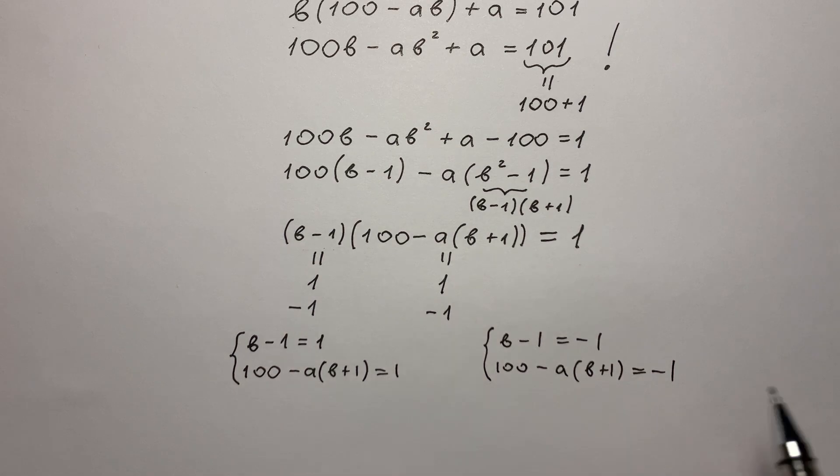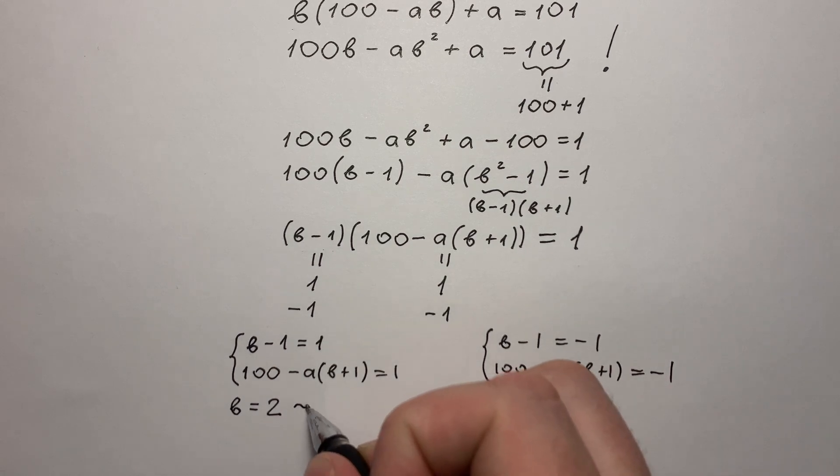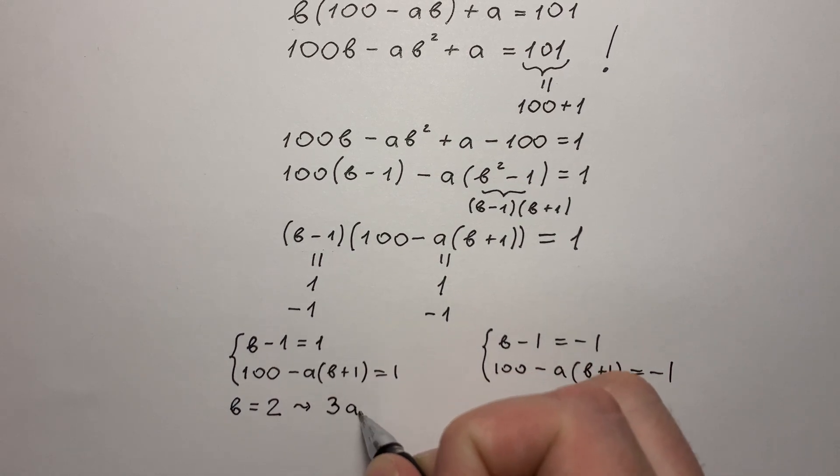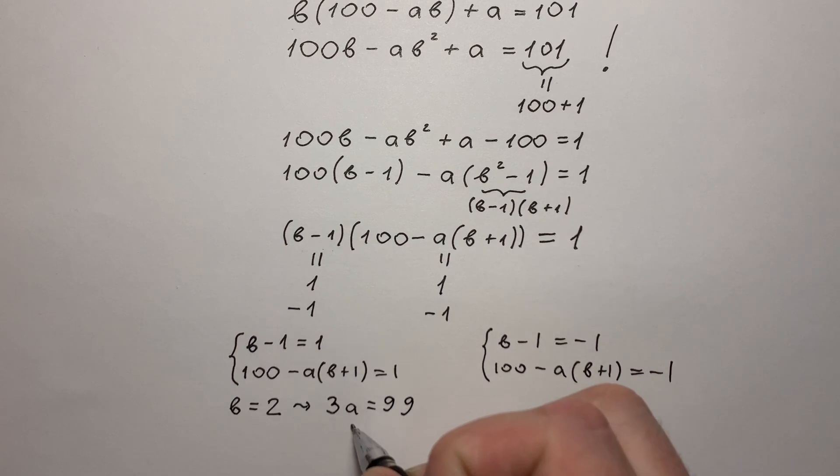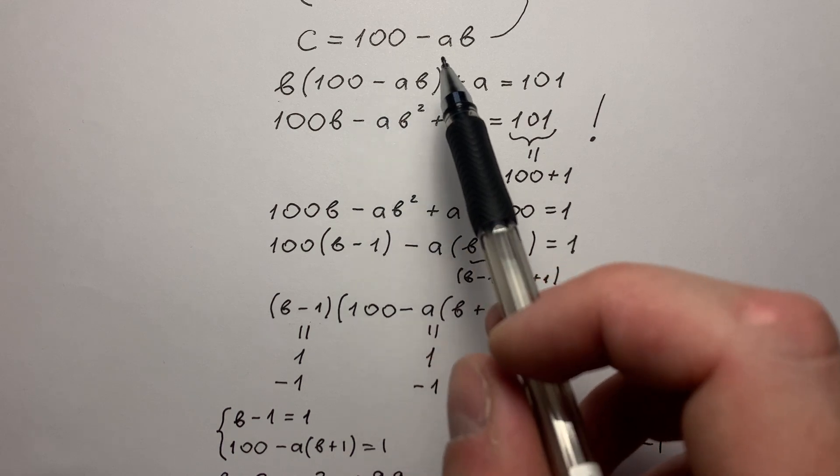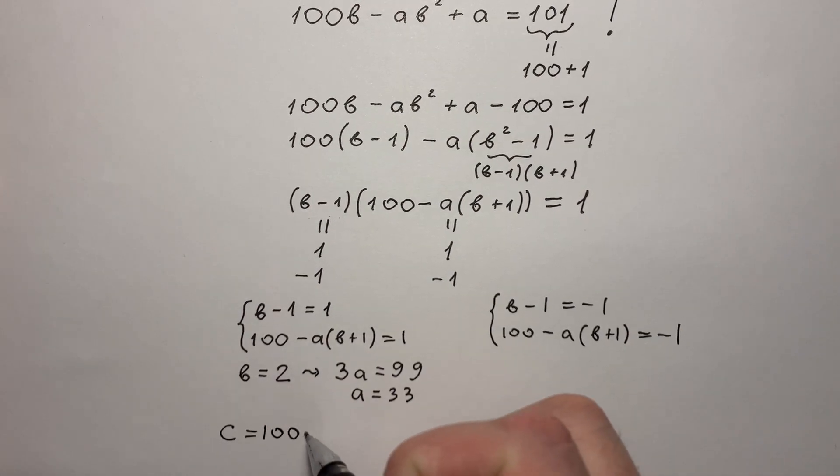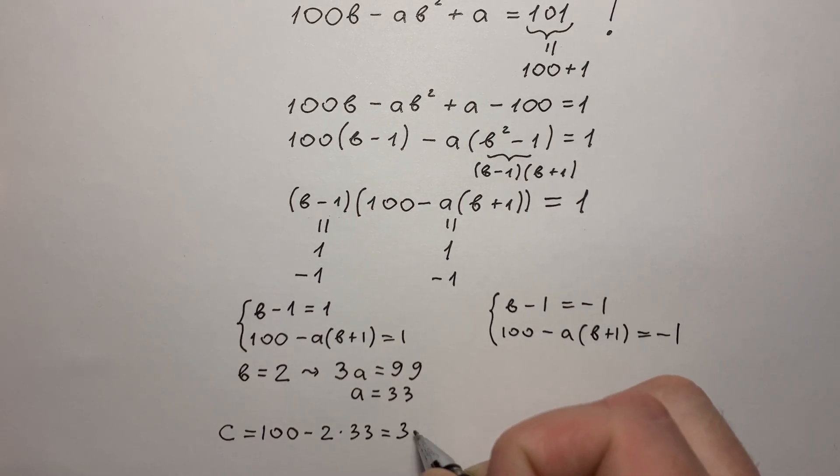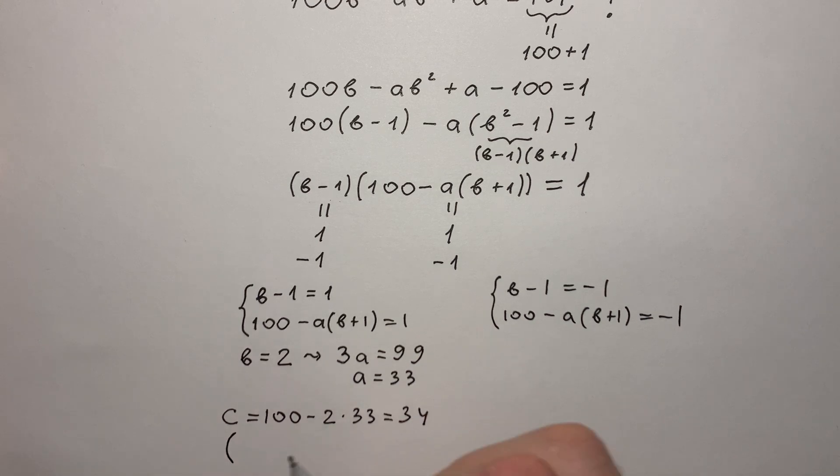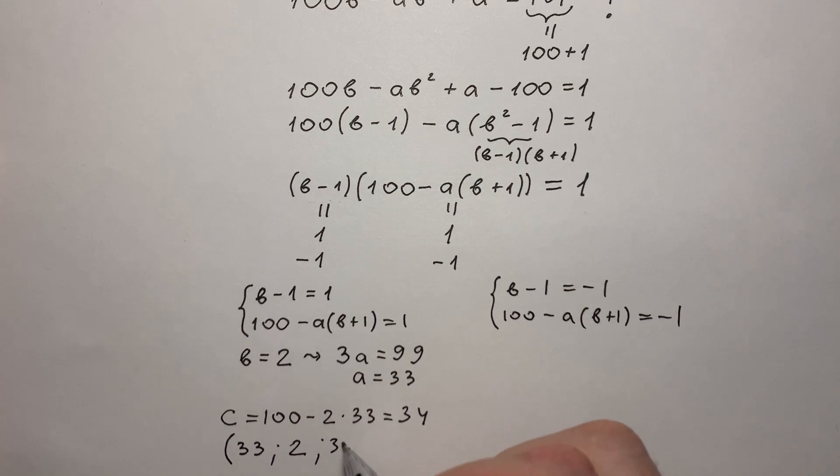These two systems are really simple. We can find that B equals 2. Putting it into the second equation we can find that 3A equals 99 and A equals 33. And remembering that C equals 100 minus AB we find that C equals 100 minus 2 times 33 and it equals 34. The first solution: A equals 33, B equals 2, C equals 34.